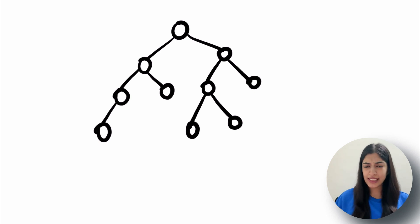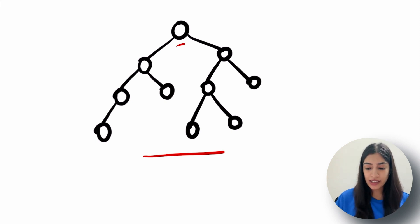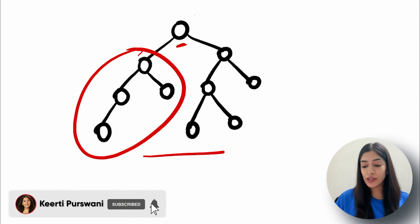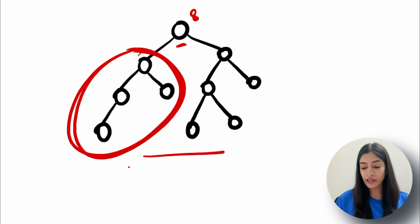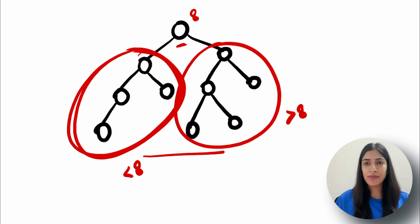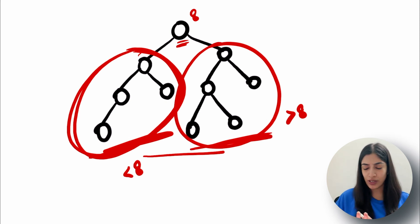To understand the introduction, I've drawn a random tree. The definition of a BST says that all nodes in the left subtree should have keys smaller than the key of the root node. So if this is 8, all nodes on the left should be less than 8, and all nodes on the right should be greater than 8. Sometimes equal-to conditions are included, but if not mentioned, assume strictly less than or greater than.